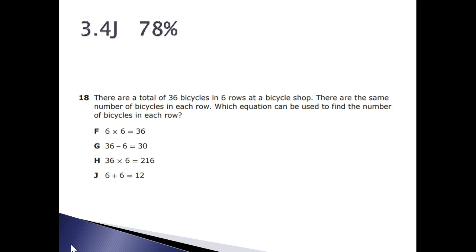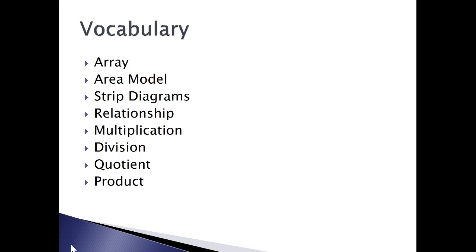Notice that this was tested on STAR in 2016. We had seventy-eight percent mastery with this item. Some vocabulary words with this particular part of the unit that you might want to make sure you go over are array, area model, strip diagrams, relationship, multiplication, division, quotient, and product.